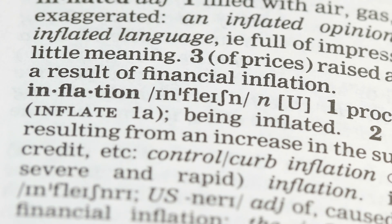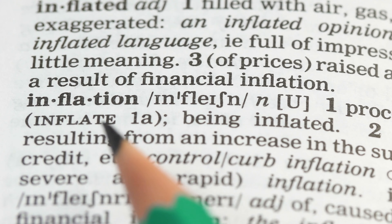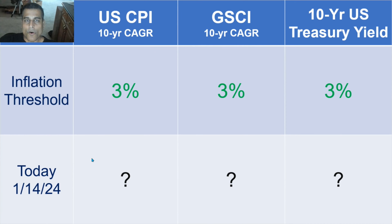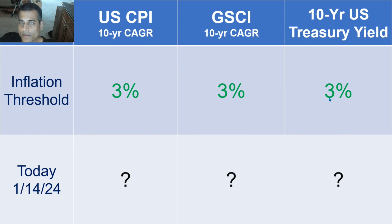Greetings, it is time for our monthly inflation update. In this month's inflation update, we look at my familiar matrix where I say that all three of these metrics have to be above 3% before I say inflation is a structural problem and money printing is too high. That is the 10-year compound annual growth rate of the US CPI, the 10-year compound annual growth rate of the Goldman Sachs Commodity Index, and the 10-year US Treasury Yield. All three have to be above 3% before I say inflation is high, and if all three were exactly at 3%, that is when inflation is optimal.